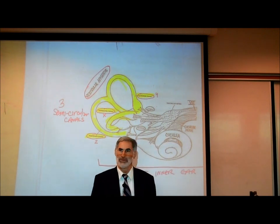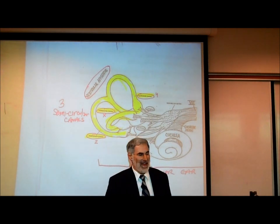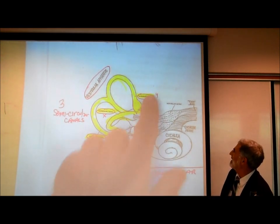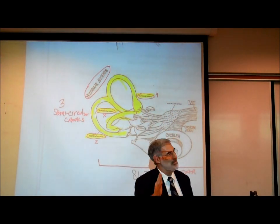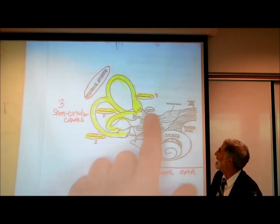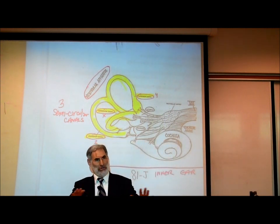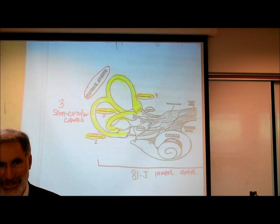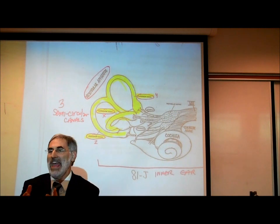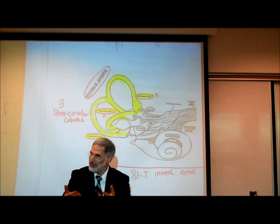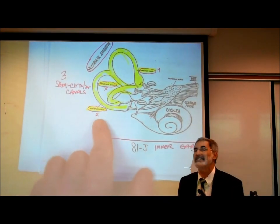Another way I can move is up and down — vertically. One of these canals is labeled the superior canal, kind of like superior/inferior, up and down. We might call that the y-axis. The third dimension: I can walk towards you or away from you — anterior or posterior. The third canal is labeled the posterior canal — the z-axis.